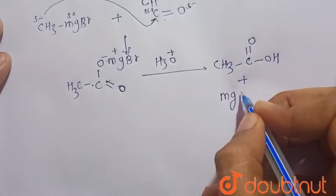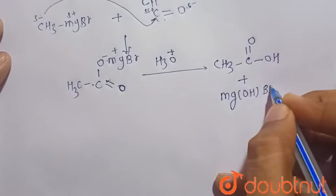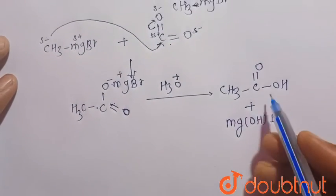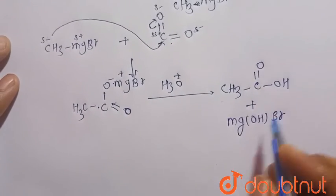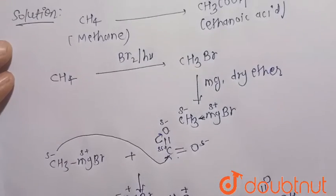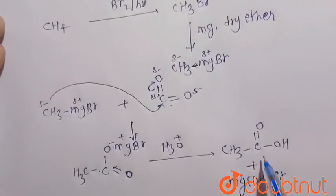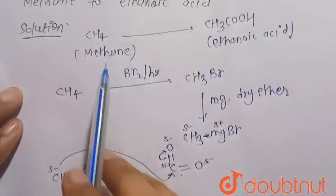And the side product Mg(OH)Br is also formed. So this is our desired or the major product. So in this way we can prepare acetic acid or ethanoic acid from the methane.